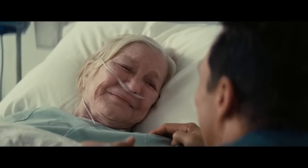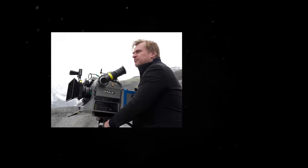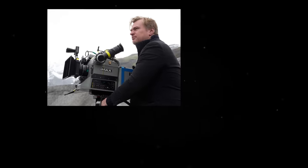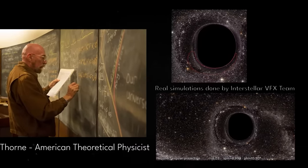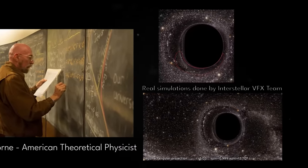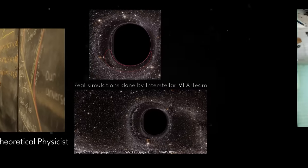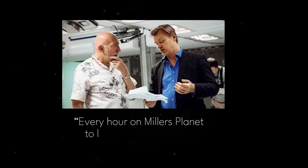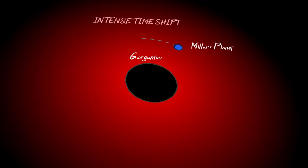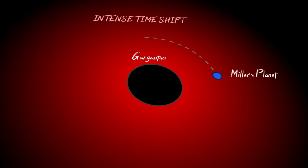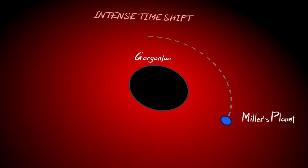During the production of Interstellar, Christopher Nolan recruited American theoretical physicist Kip Thorne to ensure that much of the film is as scientifically accurate as possible. When Christopher Nolan told Kip Thorne that he wanted every hour on Miller's planet to last seven years on Earth and that it was non-negotiable, Kip Thorne discovered through Einstein's relativistic equations that this magnitude of time dilation was only possible if Miller's planet was close enough to Gargantua without being pulled in.